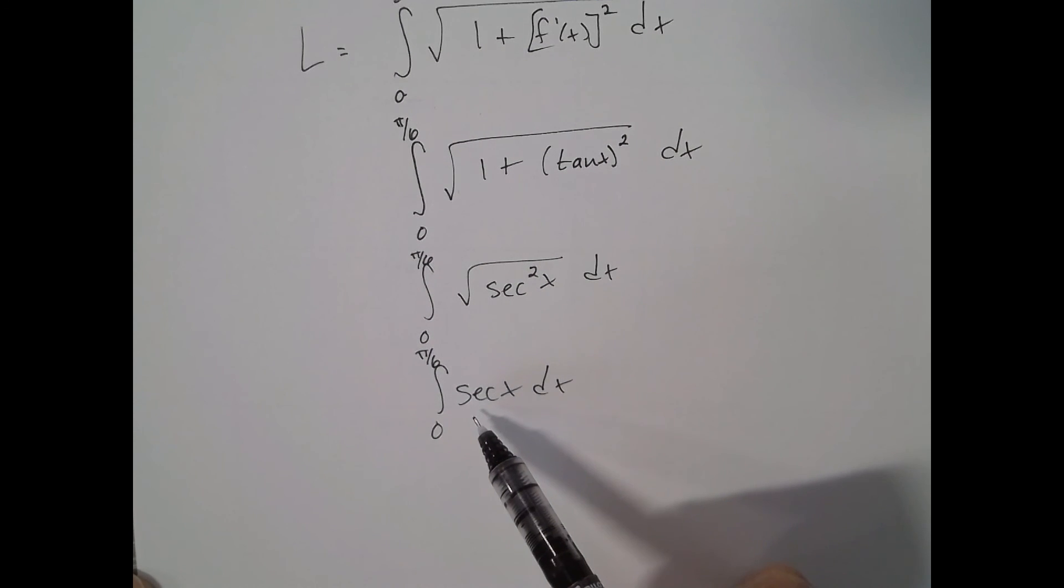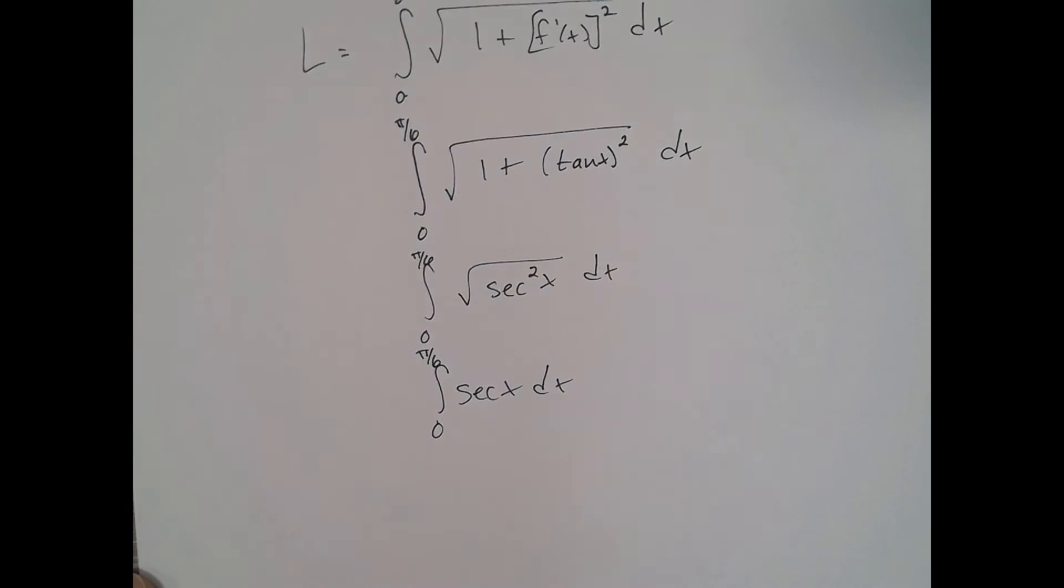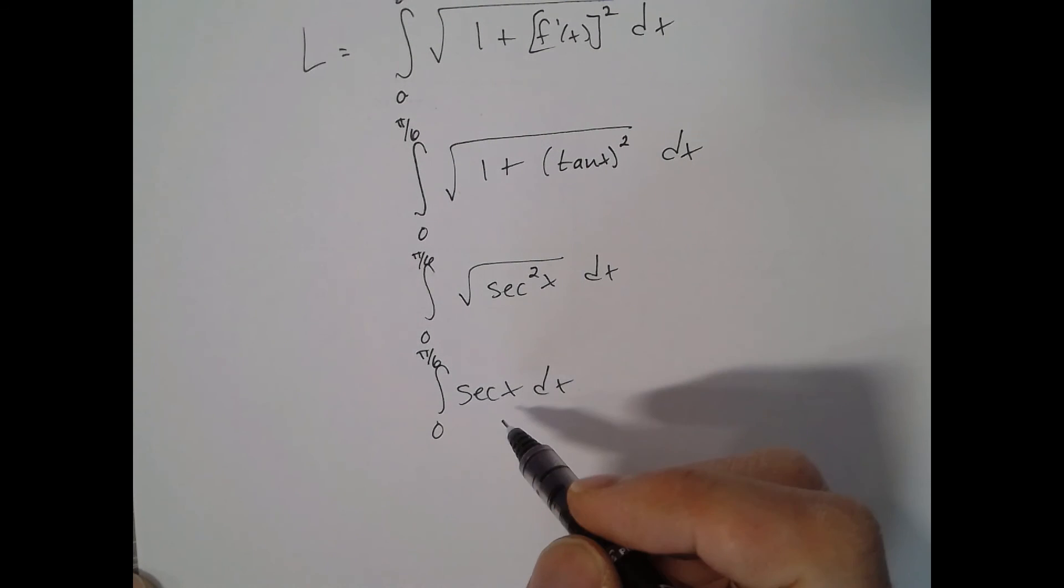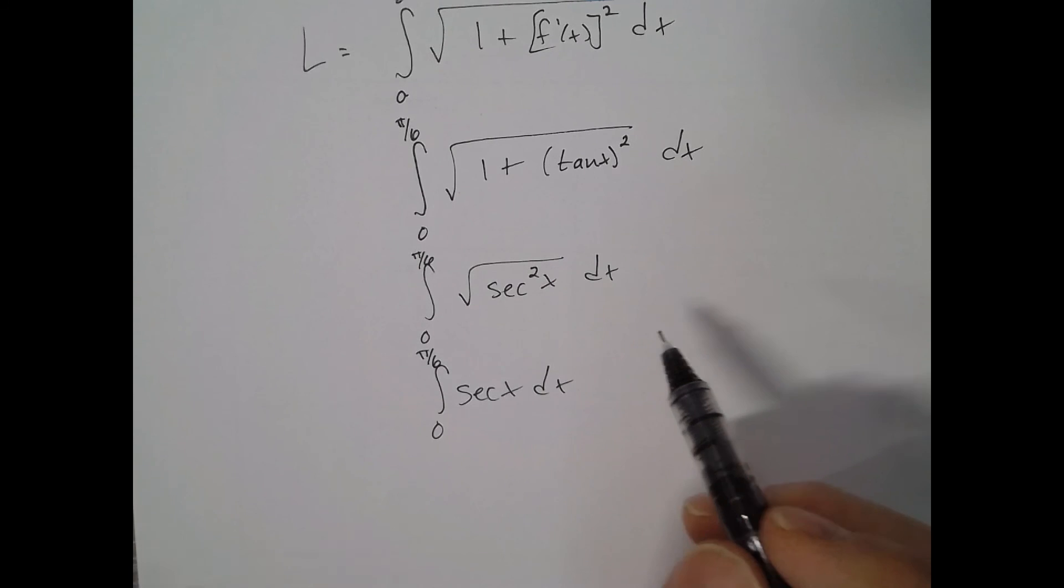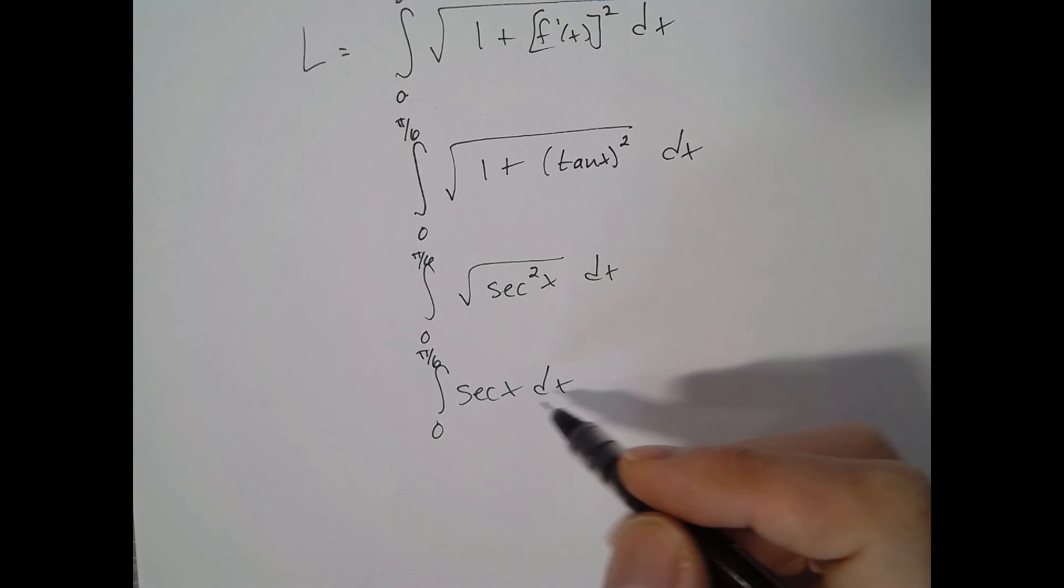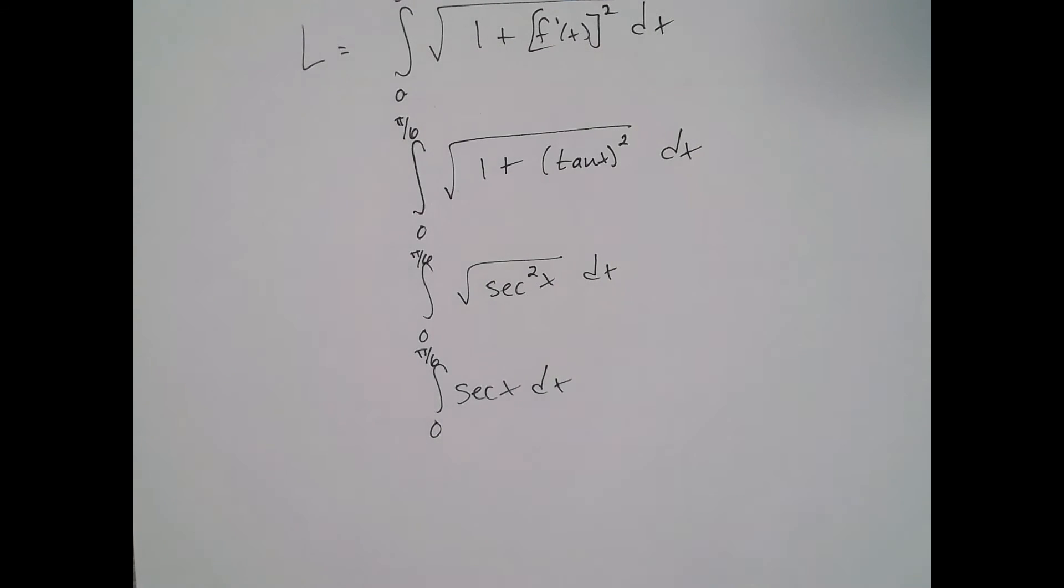And we don't know the antiderivative of secant right now. We'll maybe learn it later in the course or in Calc BC, but for now you'd use your calculator, evaluate it, and figure out what that answer is. Simple.